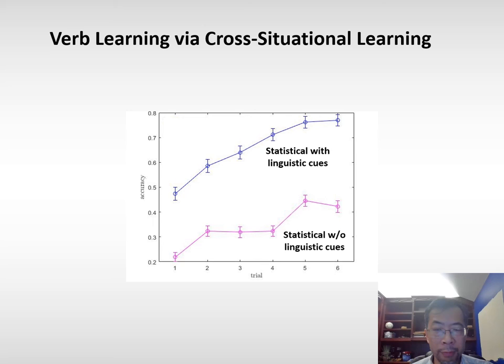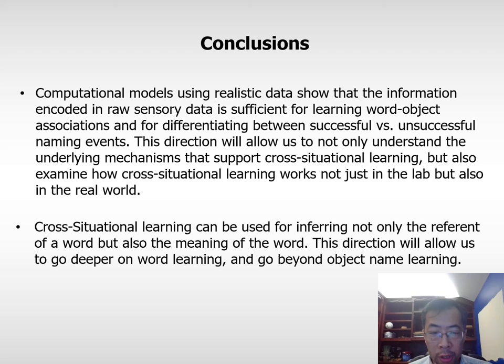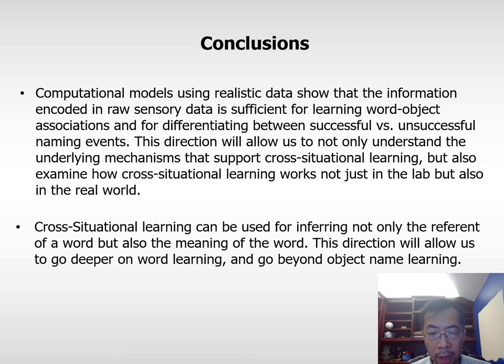To summarize: for the computational modeling direction, models using realistic data show that information encoded in raw sensory data is sufficient for learning word-object associations and for differentiating successful versus unsuccessful naming events. This will allow us to understand the mechanisms supporting cross-situational learning not just in the lab, but in the real world. For the word learning experiments, we show that cross-situational learning can be used to infer not only the reference of a word but also its meaning, allowing us to go deeper into word learning and beyond noun learning. Thank you to all collaborators on these two projects, to the funding agencies, and thank you for your attention.